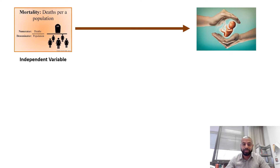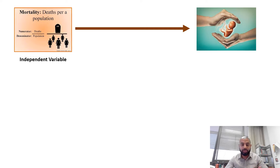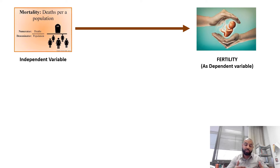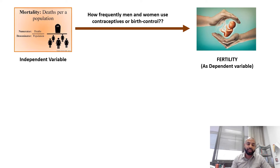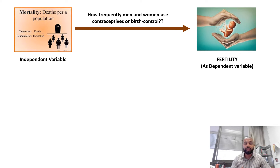As a recap: the independent variable is one where variation is not caused by changes in other variables. The dependent variable is one where changes in the independent variable or other variables cause a change in it. So here, I say that the rate at which people are dying has a relationship with the rate at which people are born — mortality has a relationship with fertility — depending on how frequently men and women use contraceptives or birth control.